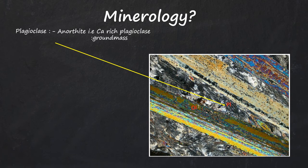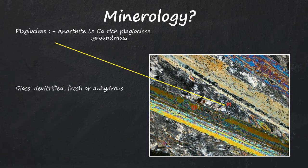Plagioclase. Anorthite, i.e. calcium rich plagioclase, is seen in ground mass. Glass is usually in the form of devitrified, fresh or anhydrous state.